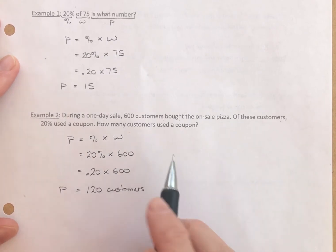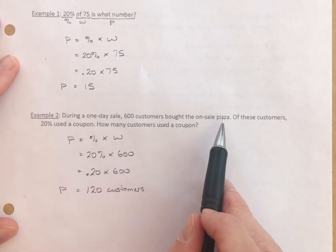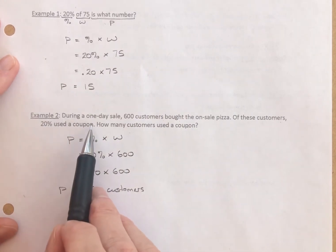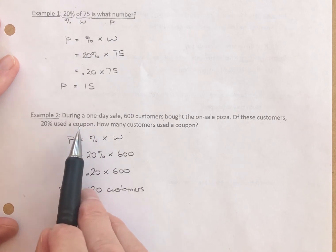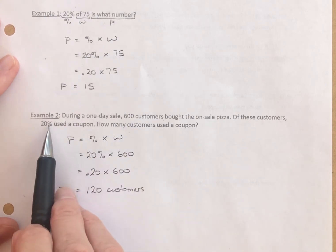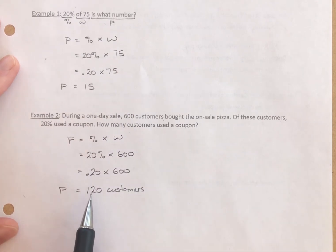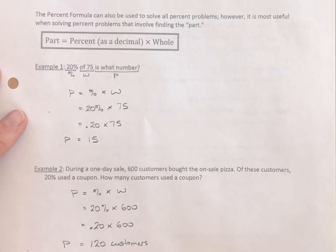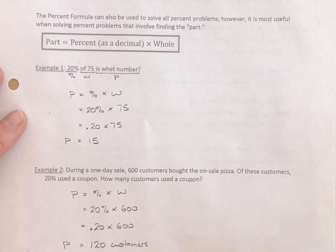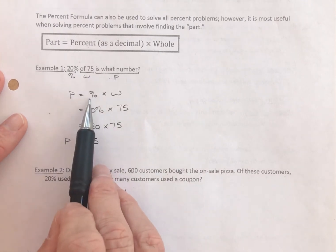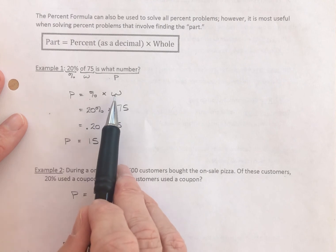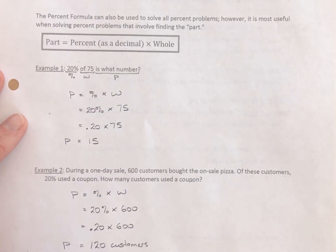And, again, this makes sense. We have 600 customers who bought it. 20% used a coupon. So, the number used a coupon should be smaller and significantly smaller. It's only 20% of 600. And so, getting 120 makes sense. So, there you have the percent formula. Again, it can be used for all situations, but I find it most useful when you're simply looking for the part. So, you have the percent and you have the whole, and then you just multiply those two numbers together to get the answer you're looking for.